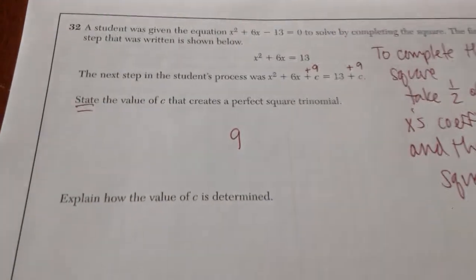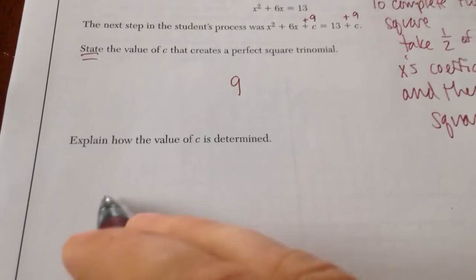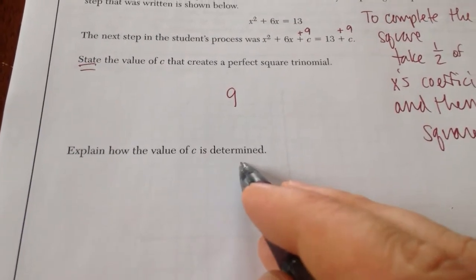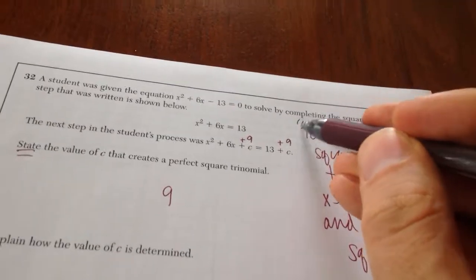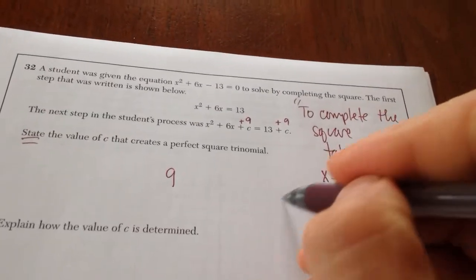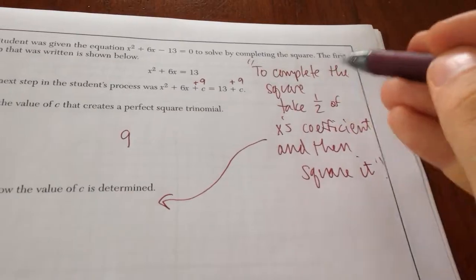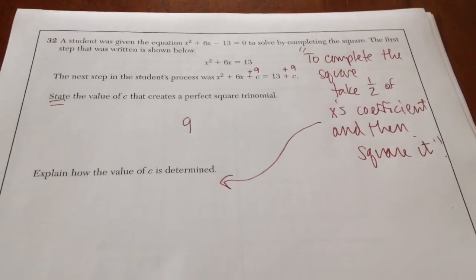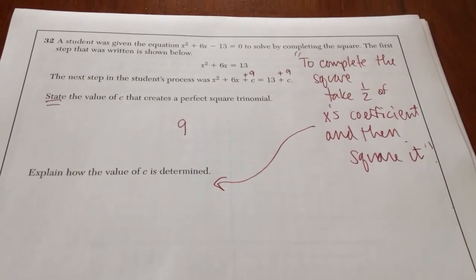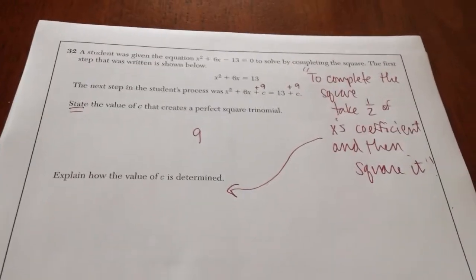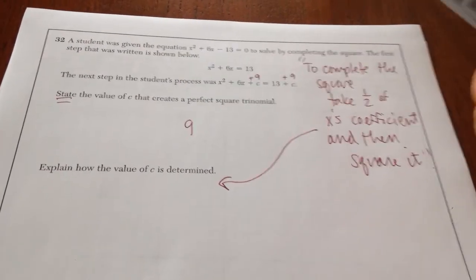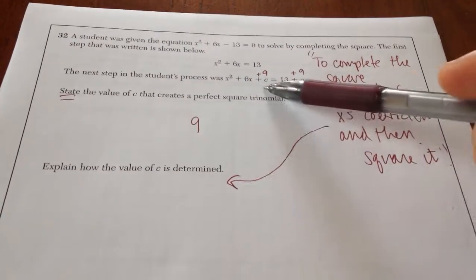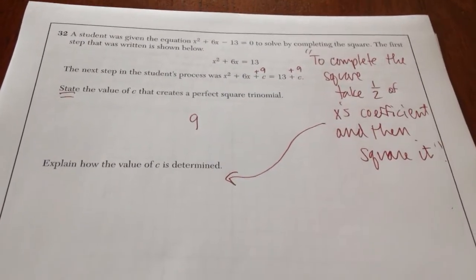I stated my answer. I give full credit for that part. Now it says explain how the value of c is determined. Now I kind of explained it right here, so if you want to use this as your explanation, this is more than acceptable for an answer. Generally speaking, it does not say to solve. It doesn't say to come up with an answer, it just says how to get the value. That's all they want to know.